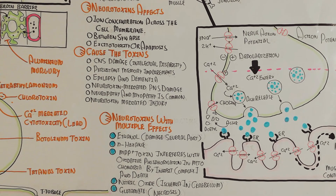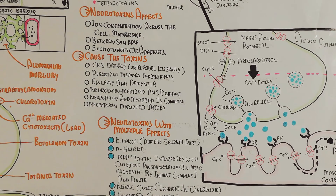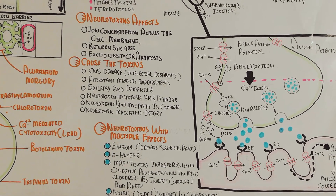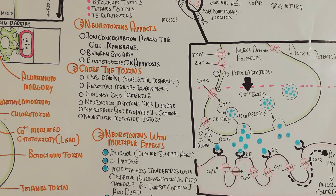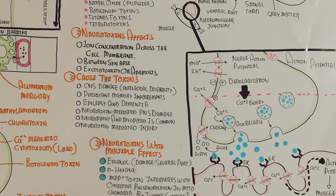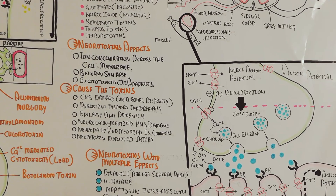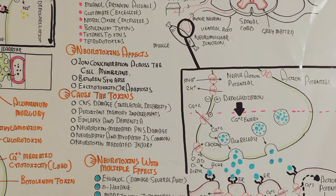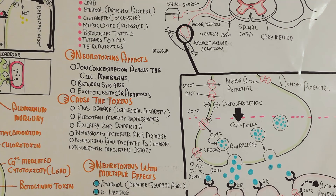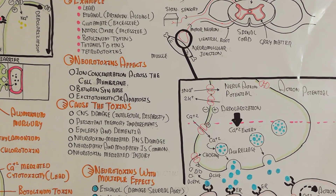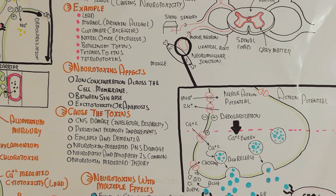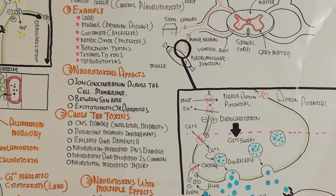The neurotoxin is a toxin that targets the nervous system — affecting neurons, the neuromuscular junction, the synapse, and other parts of the nervous system — and crosses the blood-brain barrier to infect and damage both the central nervous system and the peripheral nervous system. Thanks for watching; see you in the next video.